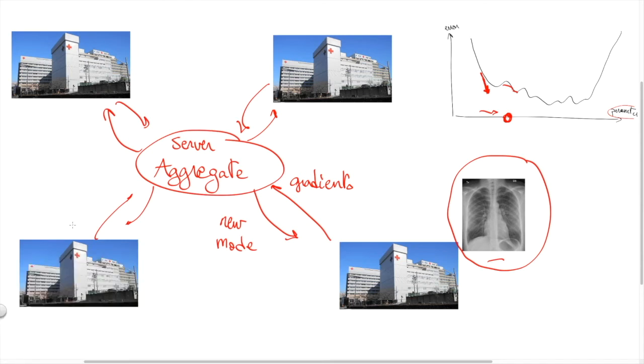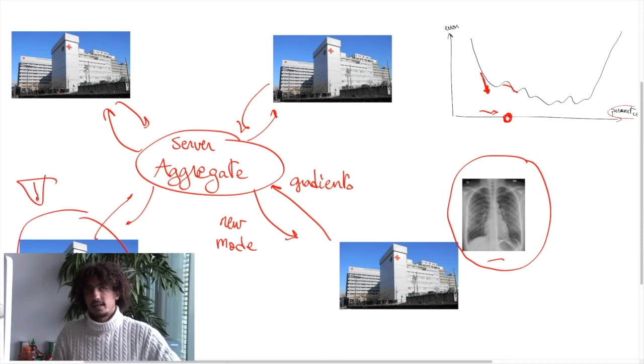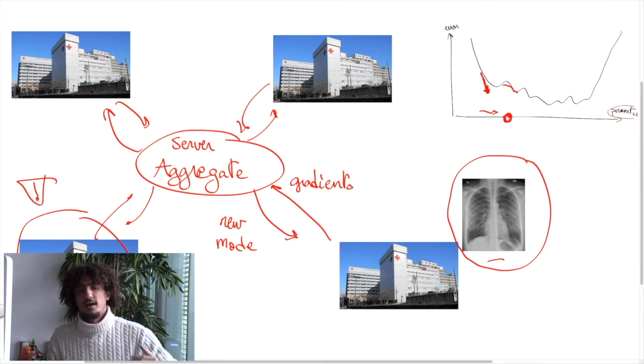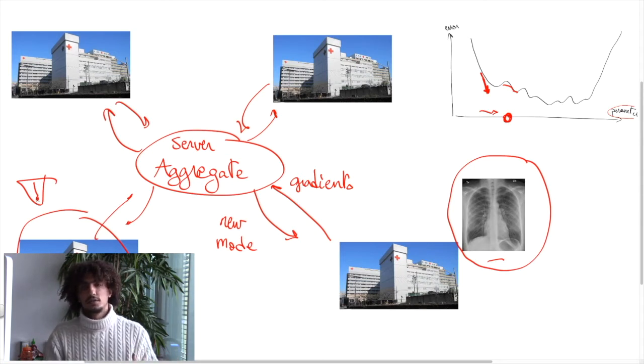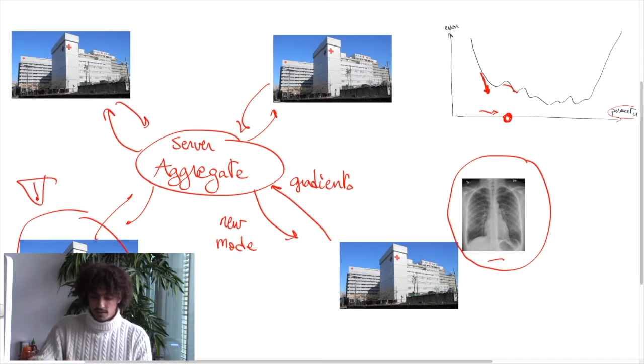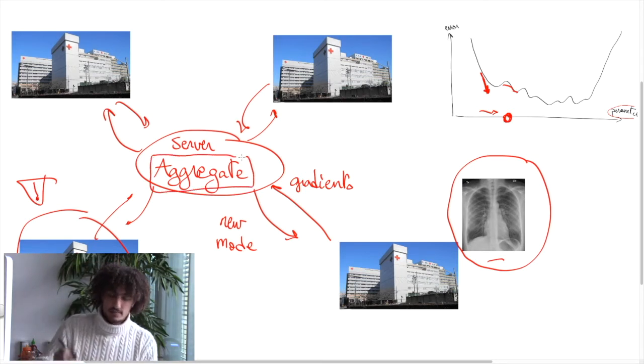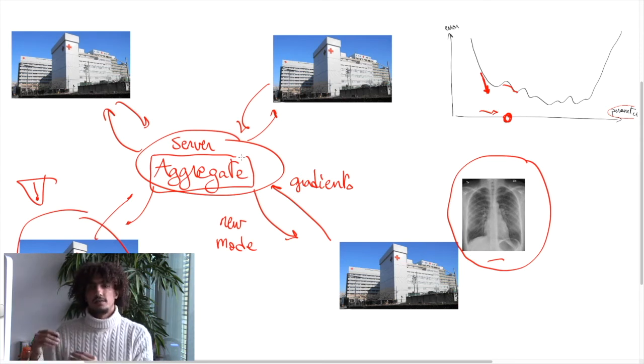The problem here is that some of them can be compromised. Imagine an attacker attacked a hospital or attacked some smartphones or an enemy of YouTube took over some accounts on YouTube and started sending false clicks to fake the recommendation system and you end up not having this video recommended if you are interested in distributed machine learning.